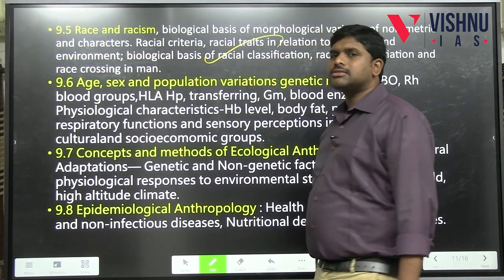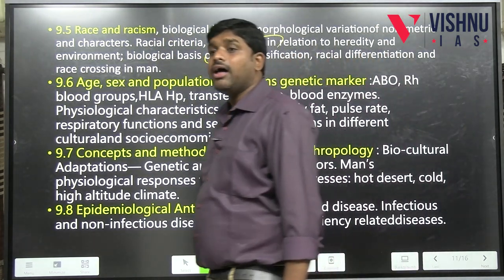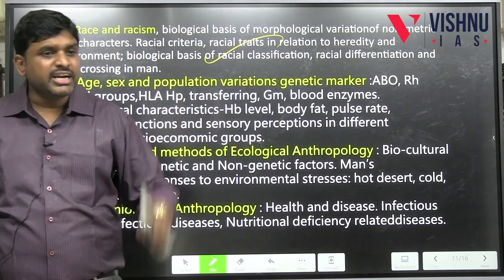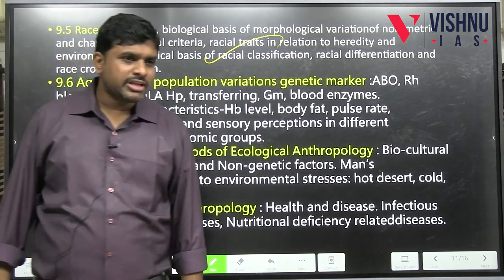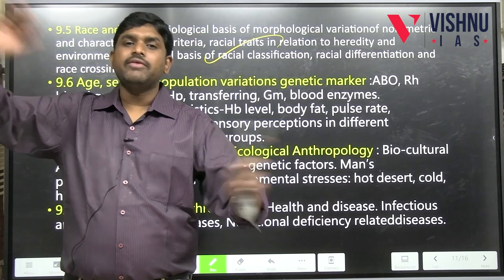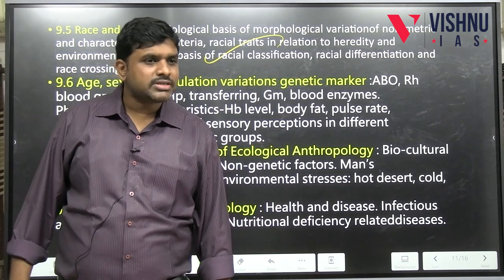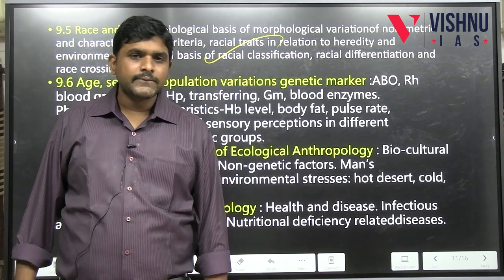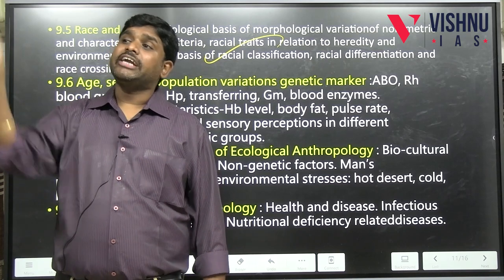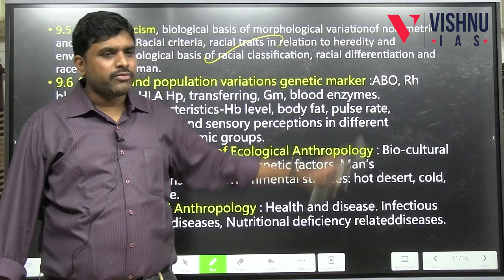Unit 9.5 covers race and racism. How casteism in India is comparable to racism in the western world. How racism evolved, what race is, and how many types of races exist.